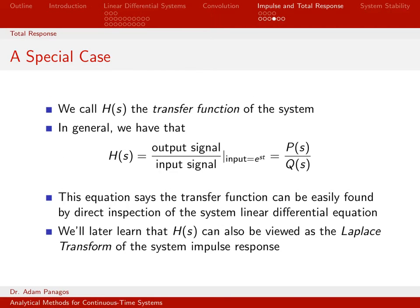So again, like I said, this quantity h of s is what we call the transfer function of the system. And in general, we can write it down just by inspection. So here's how we actually compute it. We can actually write down h of s by just examining the polynomials in our differential equation.